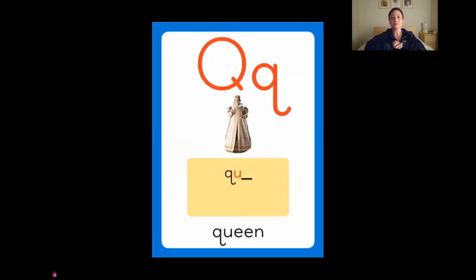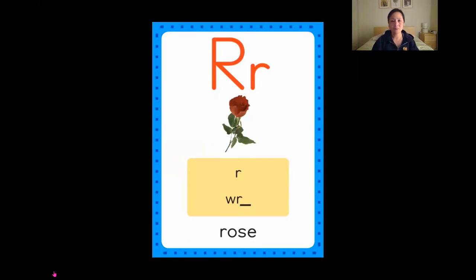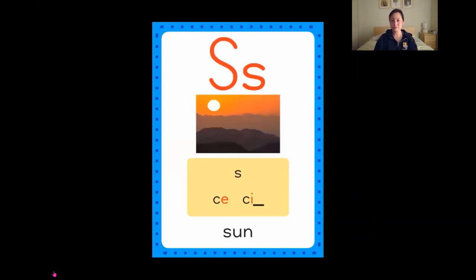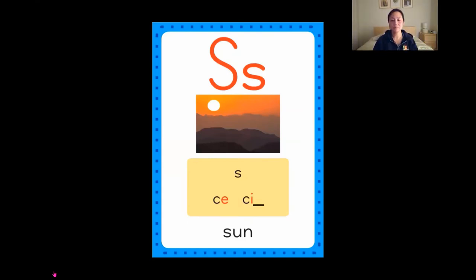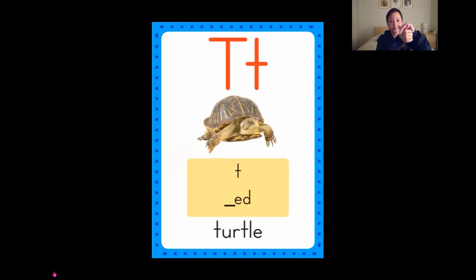Q is for queen, queen. R is for rose, rose. S is for sun, sun. T is for turtle, turtle.